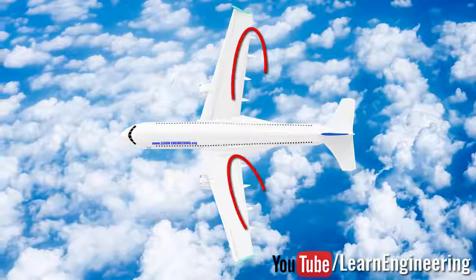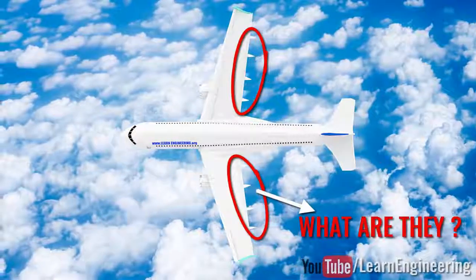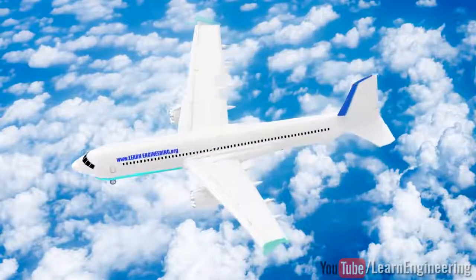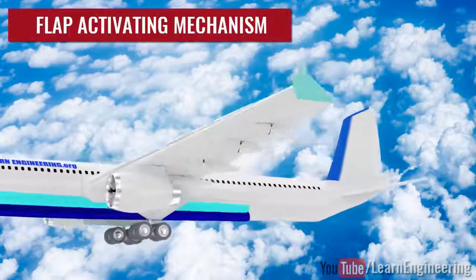Have you ever wondered what the protruding parts beneath airplane wings do? They are flap activating mechanisms.